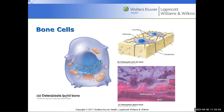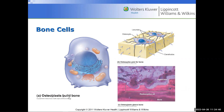The bone cells: very important — osteoblasts and osteoclasts. Osteoblasts build bone. If you break a bone and there's a fracture, the breakdown of bone is done by osteoclasts, but building the bone back — laying down the bone — that's the job of the osteoblasts. Osteocytes are the ones that nourish the bone cells. When you break down bone, you release calcium.